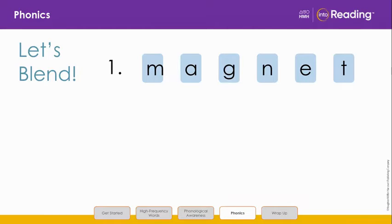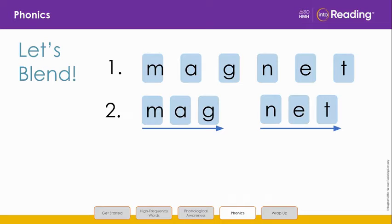First, let's say the letters and sounds together. This word has two syllables, and each syllable has one vowel sound. Let's group the letters in this long word into two syllables.